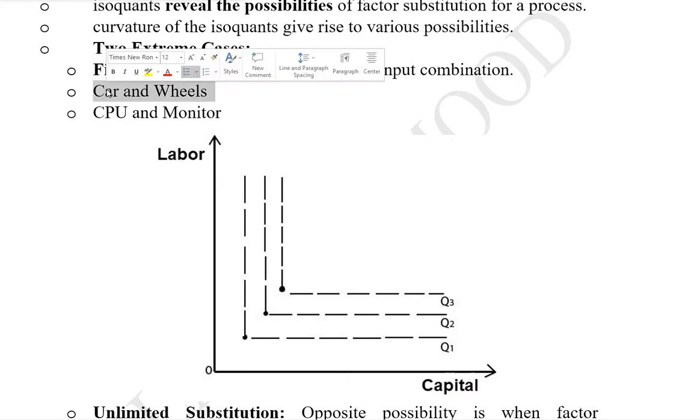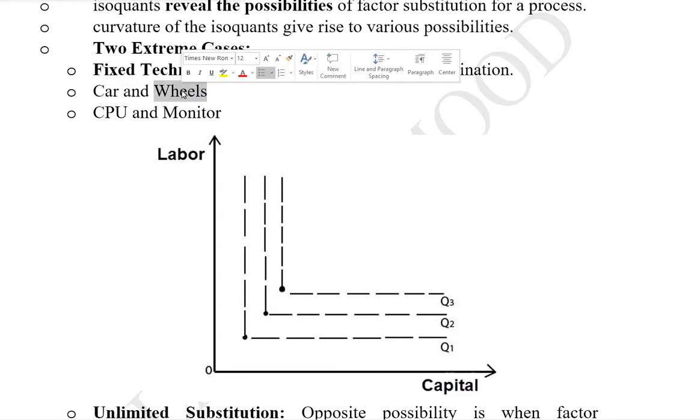For instance, if we are producing cars and wheels, there will be four wheels for a car. It will be one proportion or ratio 4, or 2 ratio 8, 3 ratio 12. This ratio or proportion will remain the same, it will not change.